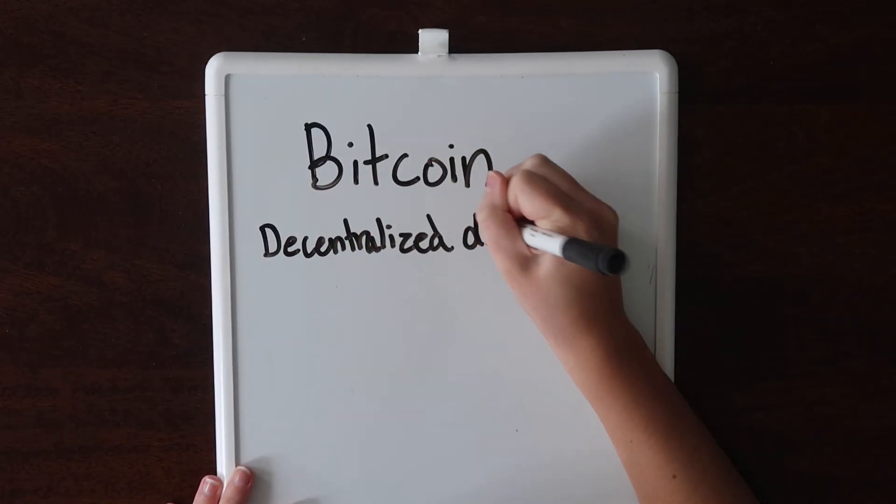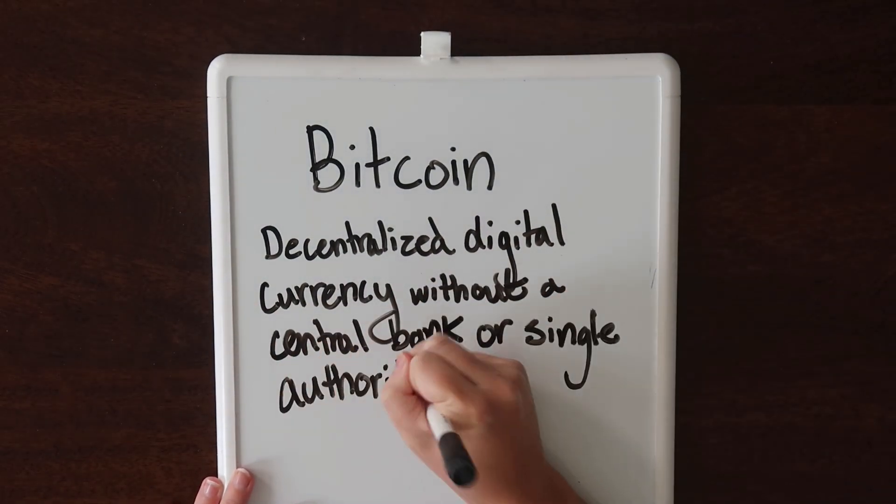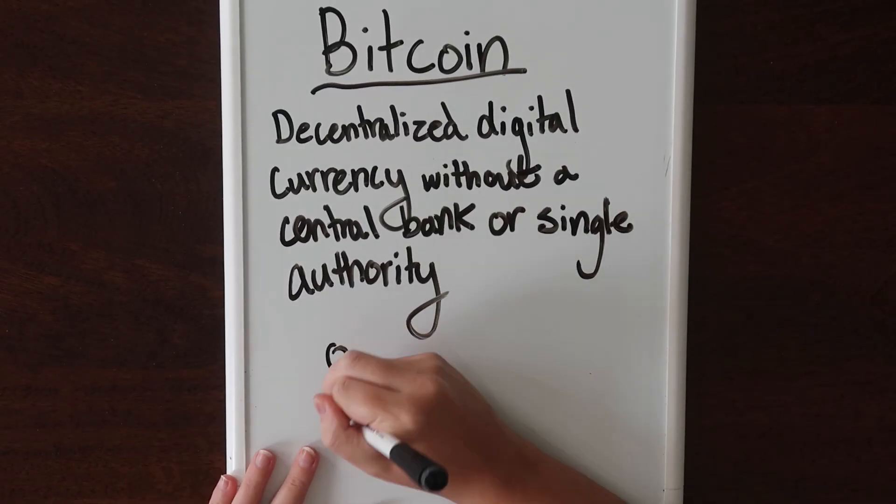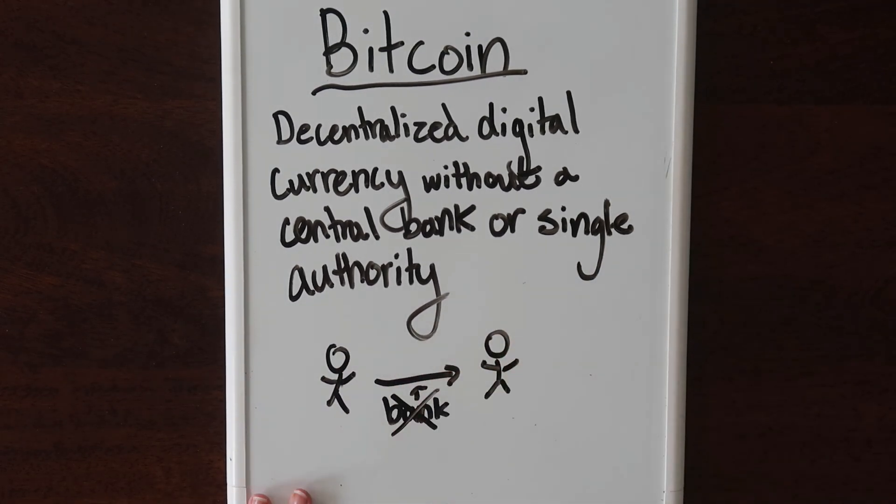The most popular application of decentralization is Bitcoin. Bitcoin is a decentralized digital currency without a central bank or single authority. It can be sent from user to user without the need for intermediaries, like a bank. We won't be talking much about Bitcoin in this series, but here's the general idea.